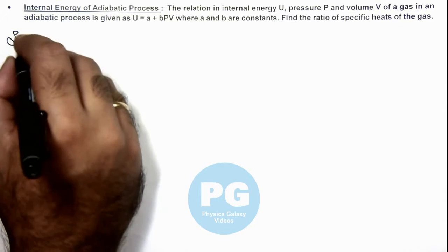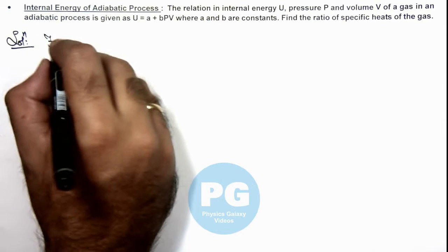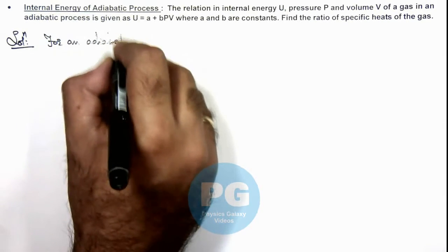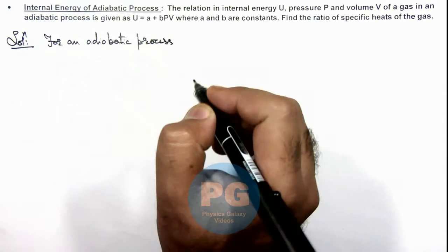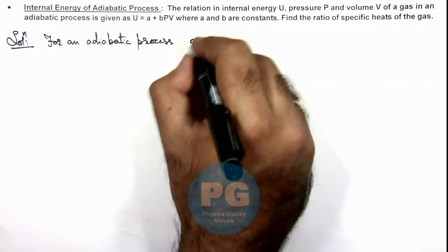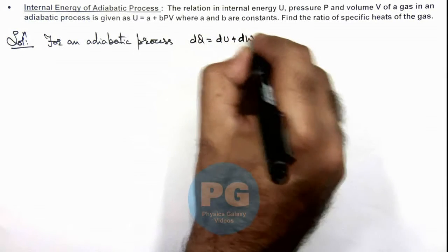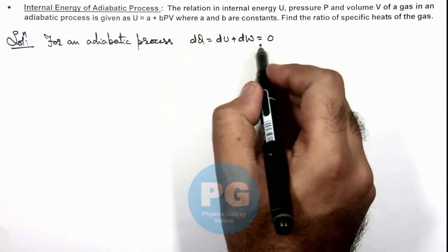So here, we can start for an adiabatic process. We can simply write by first law of thermodynamics: dQ = dU + dW, and this should be equal to zero as in an adiabatic process no heat exchange takes place.